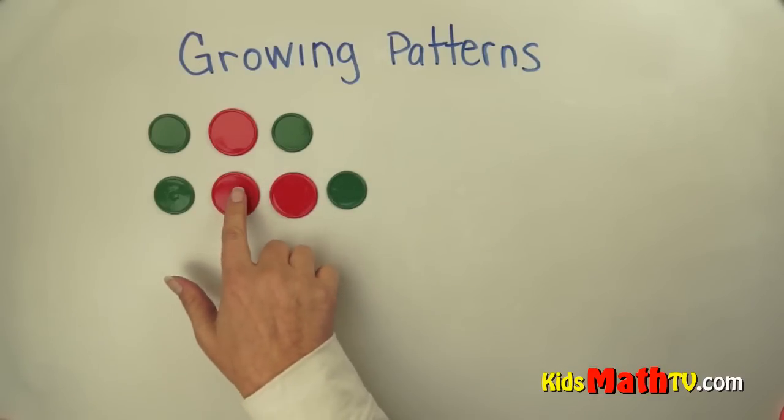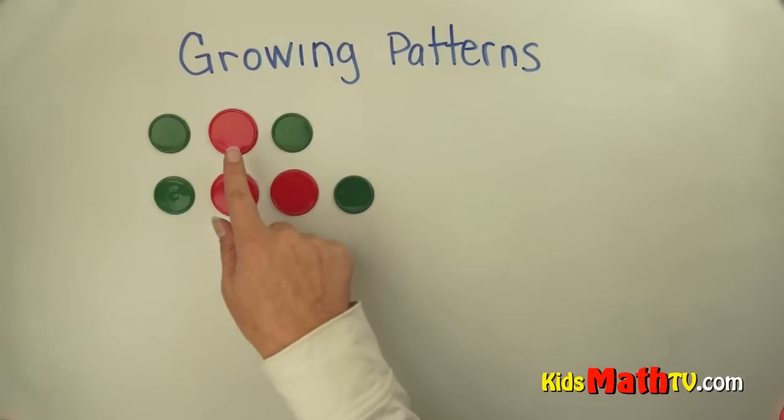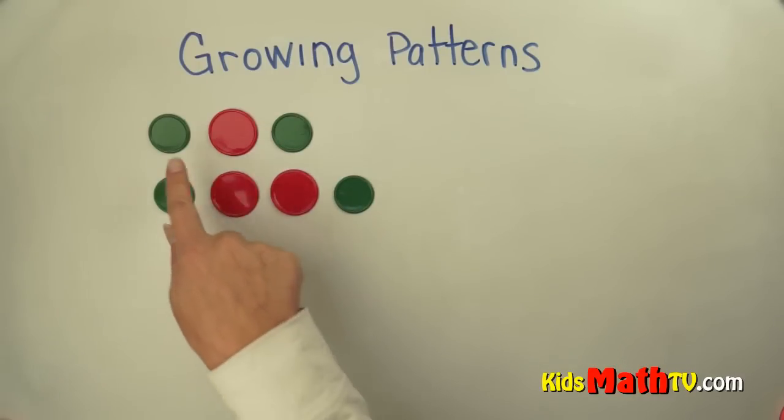Then the next one is green, red, red, green. So in this pattern, the part that's growing is the red. The green is staying the same, one green on the ends.